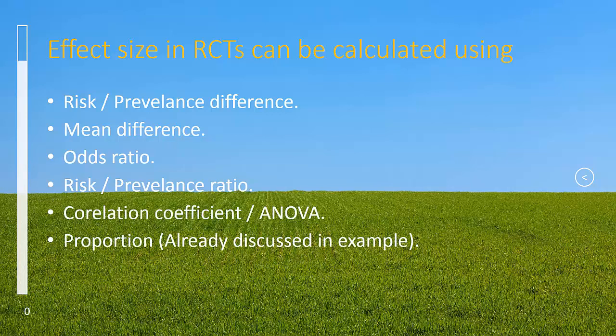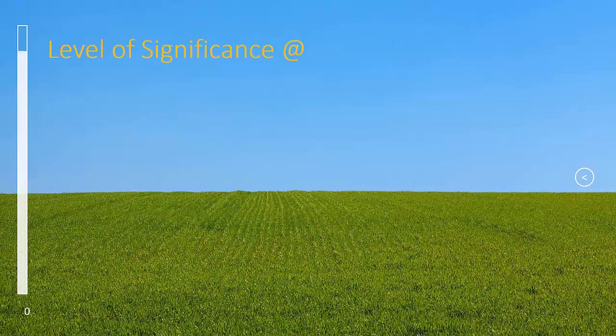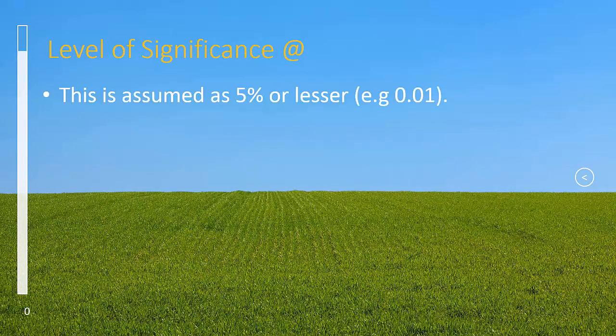Now, the next determinant is level of significance or significance level. It is denoted by alpha. The value assumed for alpha is 5% or lesser.